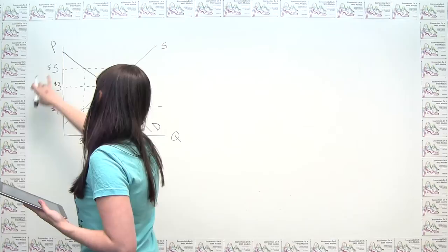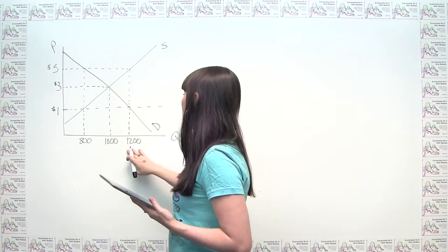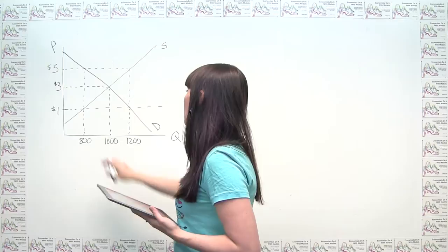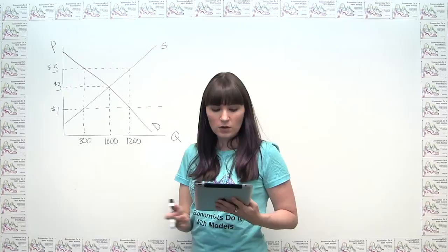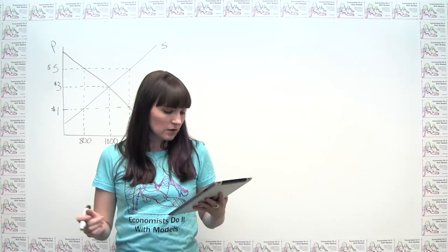We're also given a supply and demand diagram. The free market outcome is a price of $3 per bushel and an equilibrium quantity of 1,000 bushels. At a price of $1, we have 800 bushels supplied and 1,200 bushels demanded. And at a price of $5, we have 800 bushels demanded and 1,200 bushels supplied. We can use these numbers to answer the questions being asked.